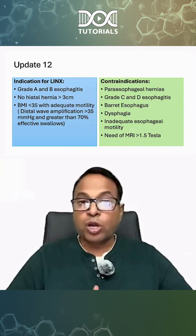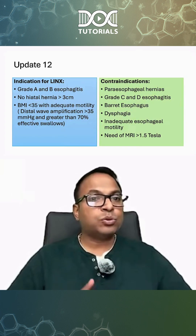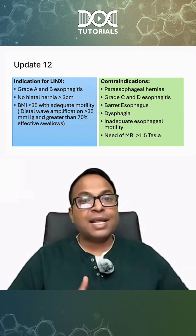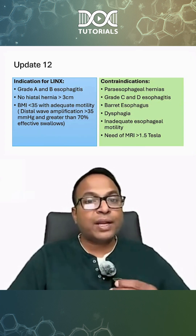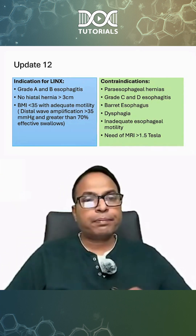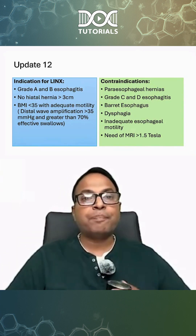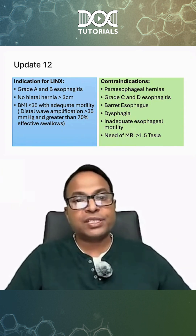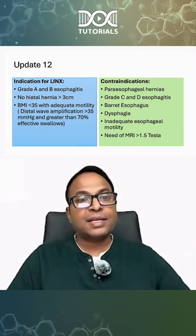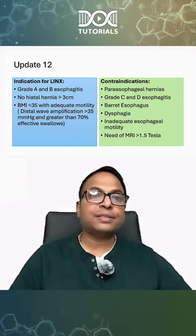There should not be a hiatal hernia more than 3 cm for LINX. So, no hiatal hernia more than 3 cm, and body mass index less than 35 with adequate motility — distal wave amplitude more than 35 mmHg and greater than 70 percent effective swallows are needed for doing LINX.